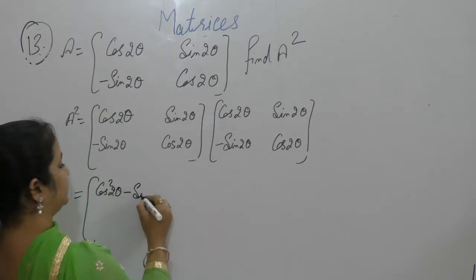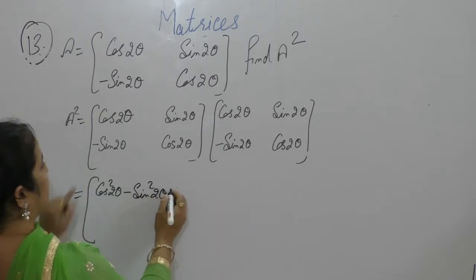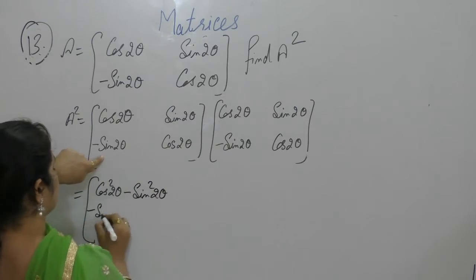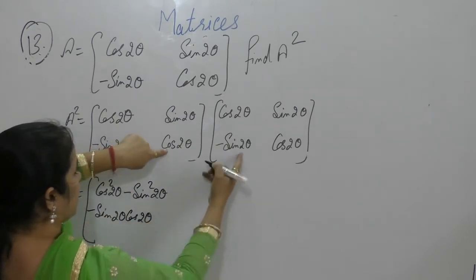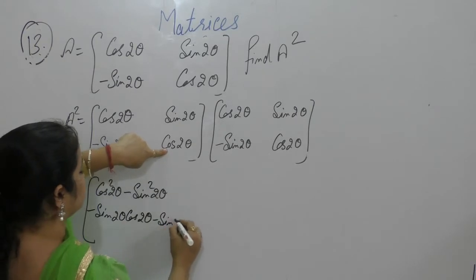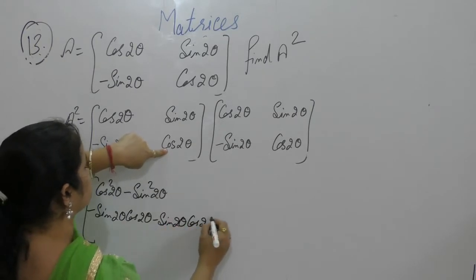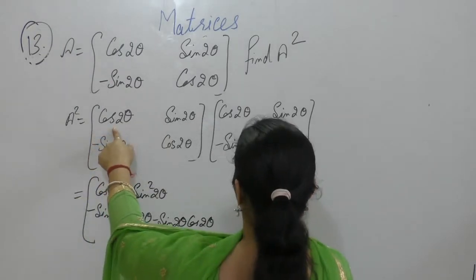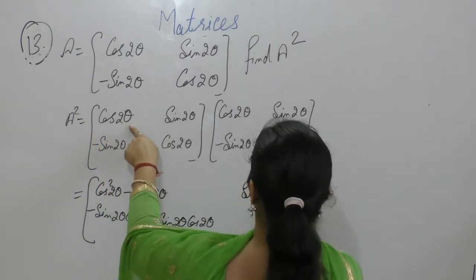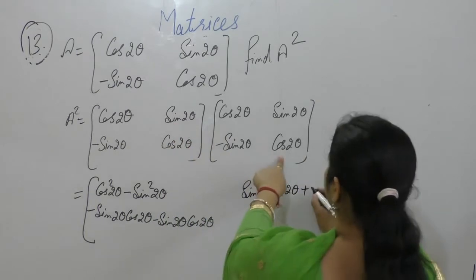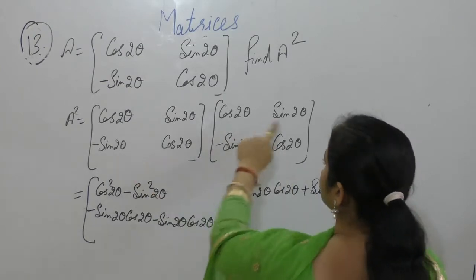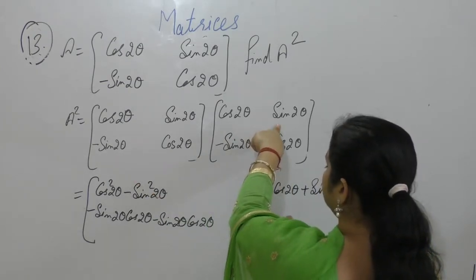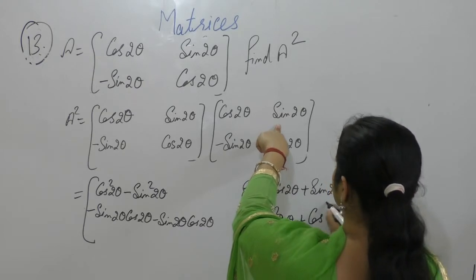Into minus sin 2 theta, minus sin into cos, minus sin 2 theta cos 2 theta, cos into minus sin, cos into sin, sin 2 theta cos 2 theta, plus sin into cos, sin 2 theta cos 2 theta, minus sin into sin, plus cos into cos.